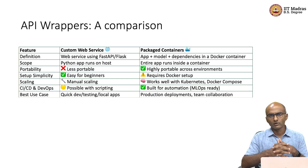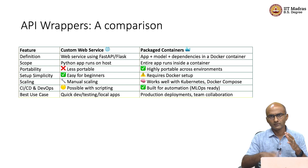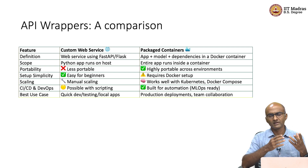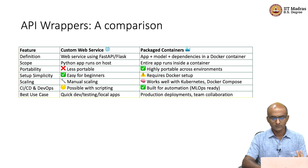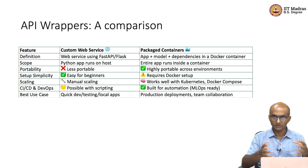We just took a look at the demo of Docker. Now let us compare both these options. Custom web service as well as package containers were two options available for wrapping APIs and making them accessible through REST protocols. Custom web service is one option, but the package containers is the better option. Let me explain why by giving you this comparison table.